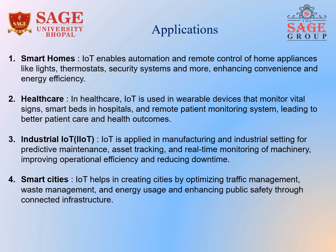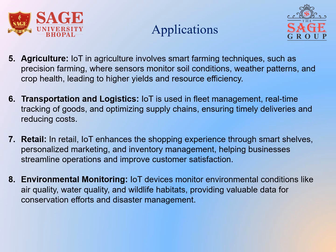The third one is industrial IoT, applied in manufacturing and industrial settings for predictive maintenance, asset tracking, and real-time monitoring of machinery, improving operational efficiency and reducing downtime. Smart cities — IoT helps in creating smarter cities by optimizing traffic management, waste management, and energy use, and enhancing public safety through connected infrastructure.